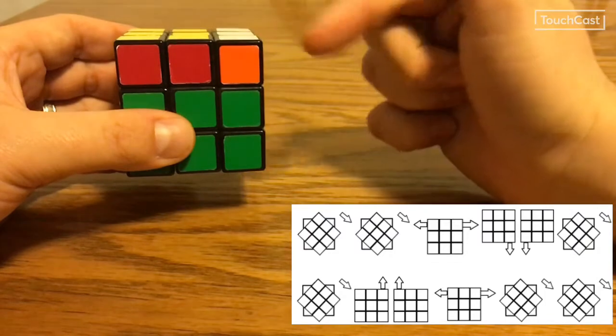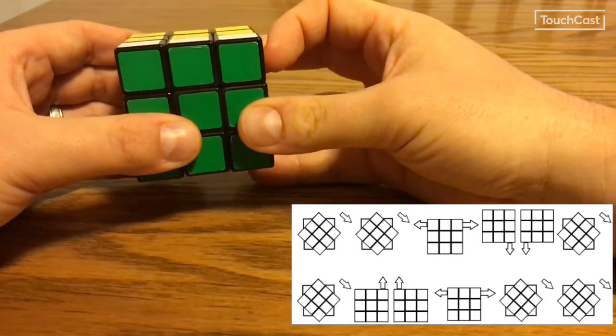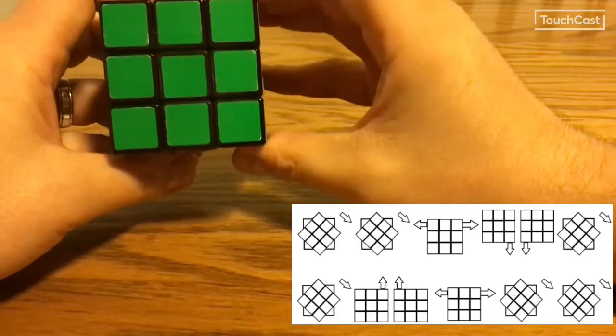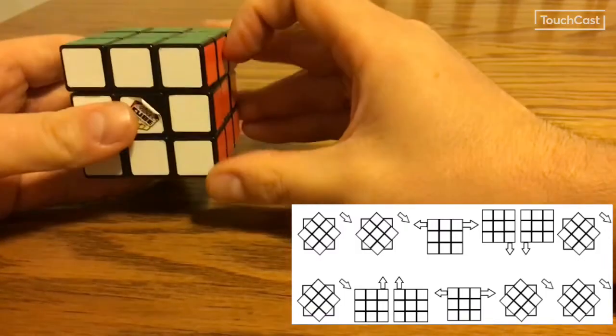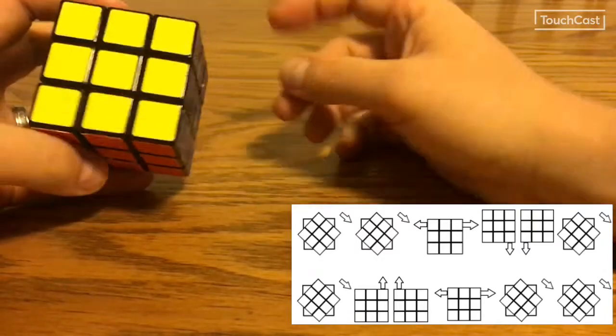Now my top row, I moved it to the left in the third step, so now I'm going to move it to the left again. My front face, I turn it twice, and you have now completely solved the Rubik's Cube.